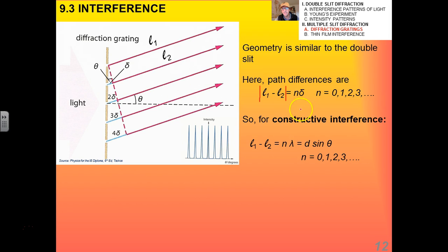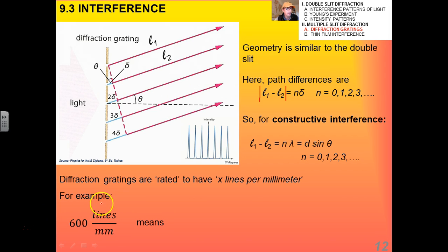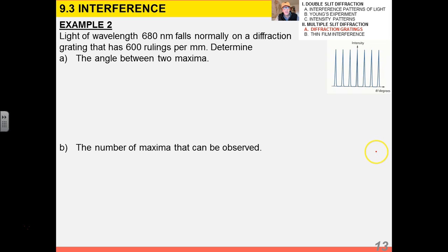Now, diffraction gratings are sort of rated to have X lines per millimeter. So, for example, a common value would be 600 lines, or you might see them written as rulings, 600 rulings per millimeter. What that means is that the actual spacing between those grooves is going to be 1 over X, 1 over 600, but in millimeters. That's going to be 1.67 times 10 to the minus 6 millimeters. Make sure that you can do that basic mathematical equation there.